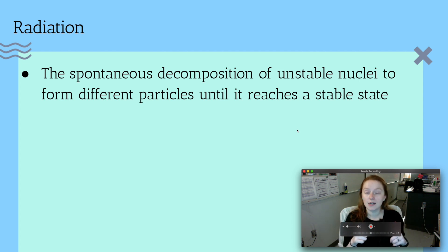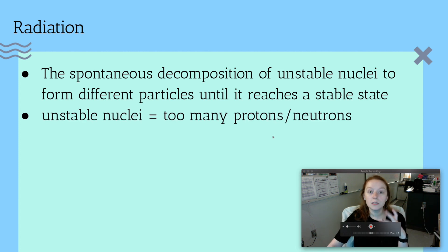We'll get to that here in a second. But it's just going to spit these things out until it can get itself to a stable state. So if you have something too big, it will kick out protons and neutrons, and then eventually it will get to a place where it's small enough, it's comfortable with its ratio of neutrons and protons, and it will stay the same. Unstable nuclei just means too many protons or neutrons. The ratio is off.